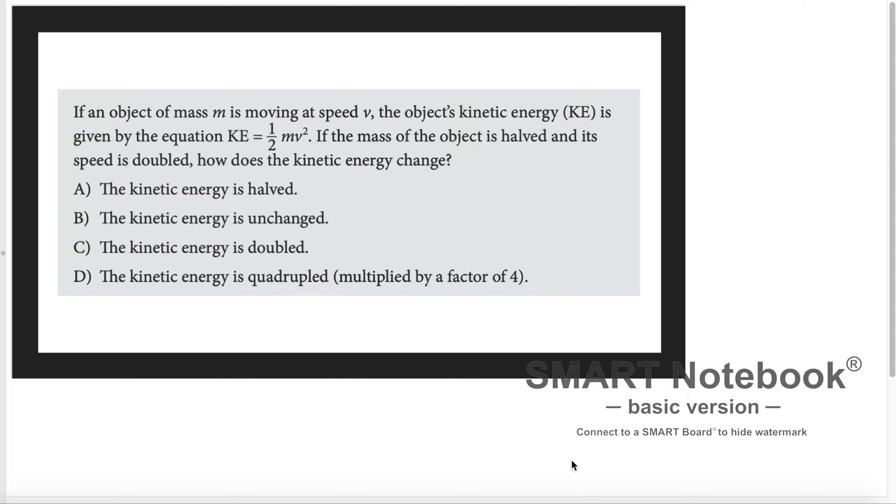The problem states: if an object of mass m is moving at speed v, the object's kinetic energy KE is given by the equation KE = 1/2 mv². If the mass of the object is halved and its speed is doubled, how does the kinetic energy change?